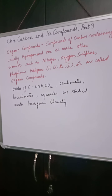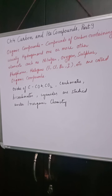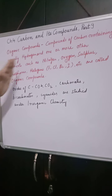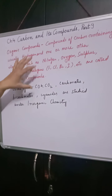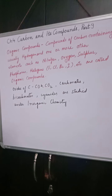We have studied hydrocarbons in the previous lecture — saturated and unsaturated hydrocarbons. Those compounds are organic compounds. If you are finding carbon and hydrogen, and also nitrogen, oxygen, sulfur, or phosphorus in the structure, those compounds are studied under organic chemistry. Hydrocarbons and their derivatives are studied under organic chemistry.